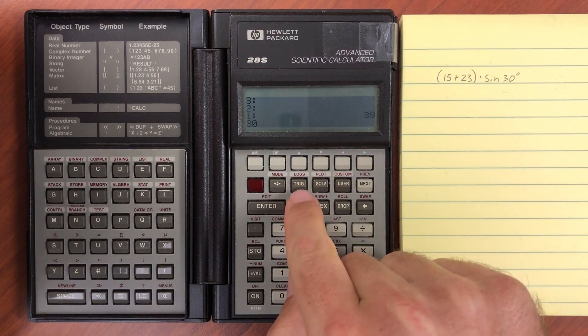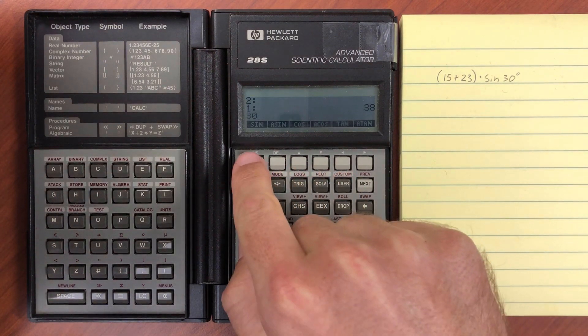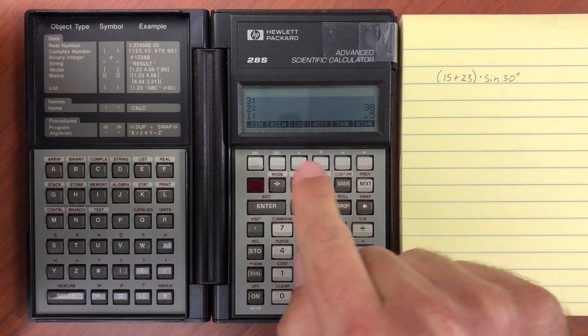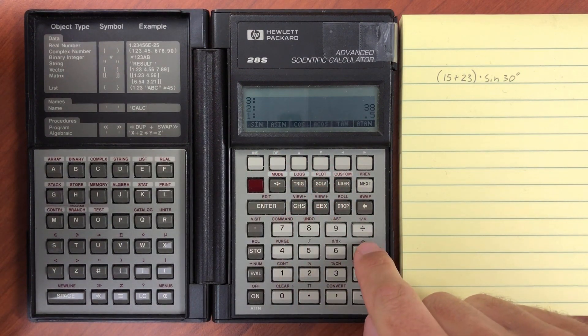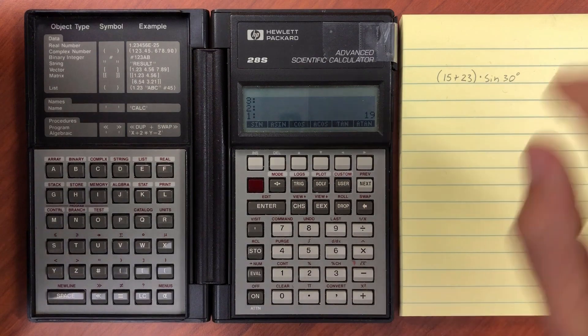If I go here to trig, I can take the sine of that. We are already in degree mode, and then multiply those together. And that gives me the answer of 19.